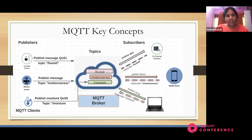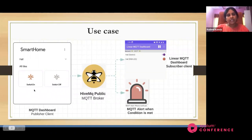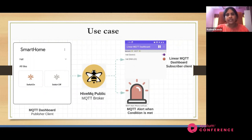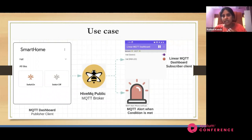Now let's get into our actual use case. We have kept it very minimal and simple. We have considered a smart home with smart devices, smart LEDs, switches, and so on. We have switch on and switch off events that get generated — this is the publisher client. When a user performs a switch on, it goes to the HiveMQ broker, and the broker has two subscribers: one is a dashboard app, another is an alert app. These two are subscribed to a topic called Hall Switch, and when an action is performed, the payload is sent to the corresponding subscribed clients via HiveMQ.